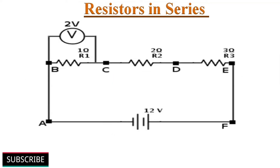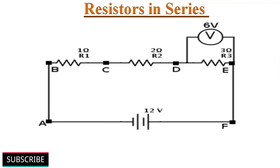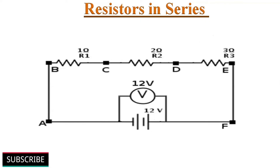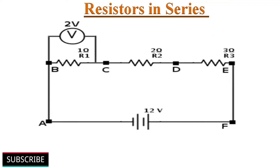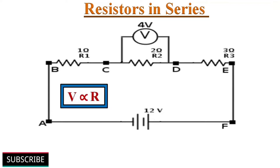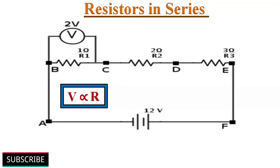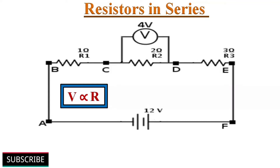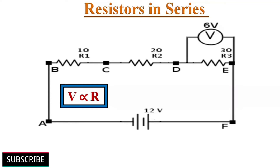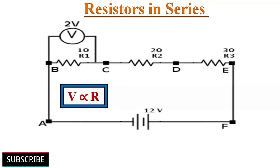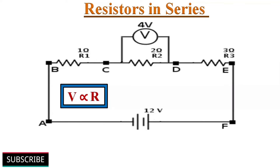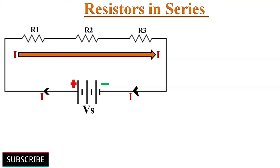Because the same current flows through the entire circuit, voltage across each resistor varies according to their resistance values. Since voltage is directly proportional to resistance, the higher the resistance value, the higher is the voltage drop across it. The series resistor network can also be called a voltage divider network. So let's say voltage drops across series resistors R1, R2, and R3 are V1, V2, and V3 respectively.